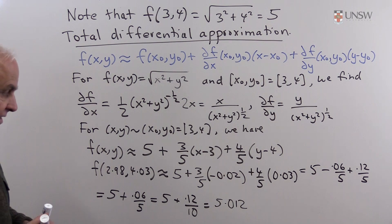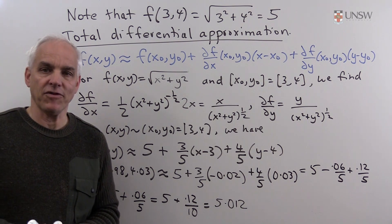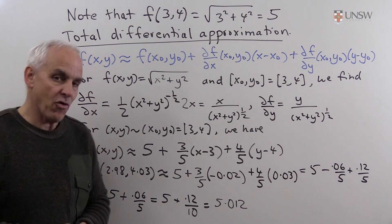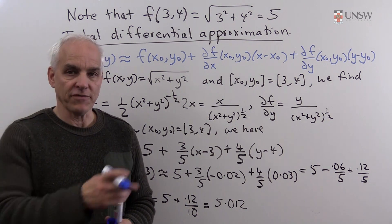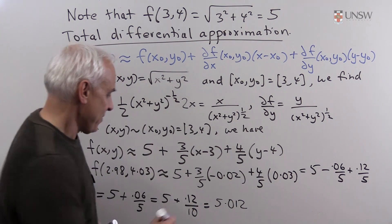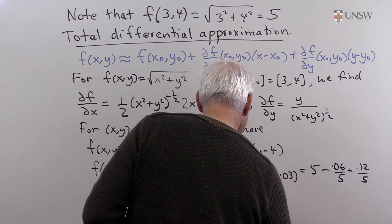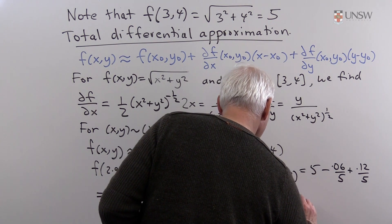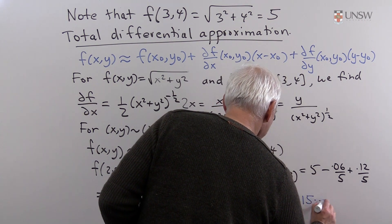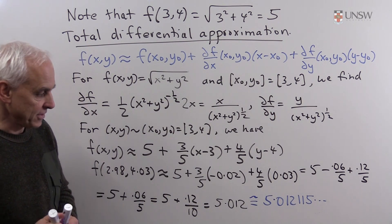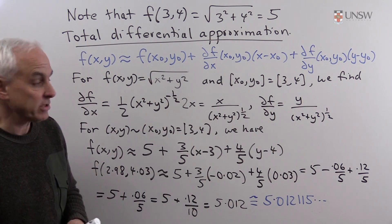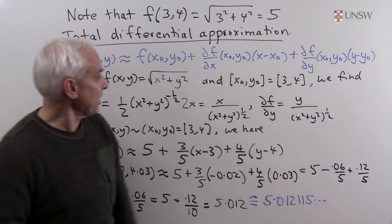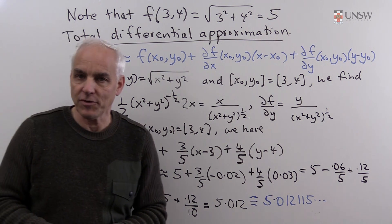So 5.012 is the approximate value of the function at (2.98, 4.03). Checking with Wolfram Alpha, this is pretty close to the real answer, which is 5.012115 and further digits. This relatively naive linear approximation works well because the point of interest is close to our base point (x₀, y₀) = (3, 4).